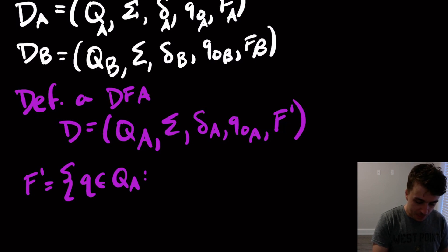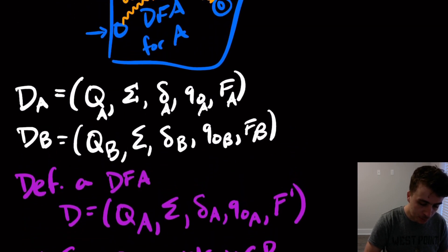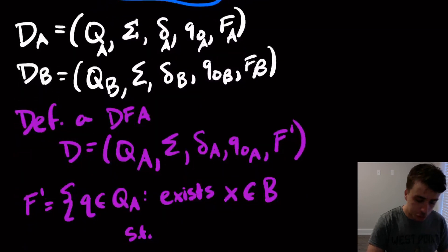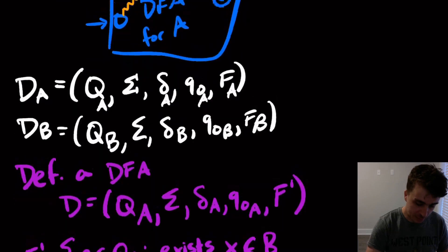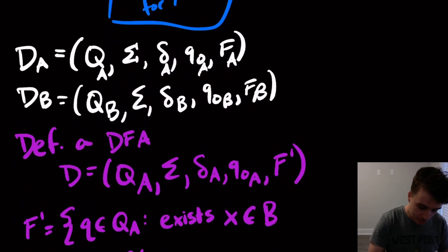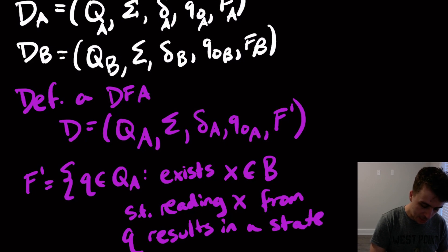And then what are we doing here? What we're doing is we're saying that there exists a string X in B such that we want to be able to go from this state. So this Q right here is representing this intermediate state right here. So what we want to do is we want to say if there exists an X that lands us in one of the original final states then we're going to mark it as a final state. Mark this one as a final state such that reading x from that state q results in a state in f sub a.